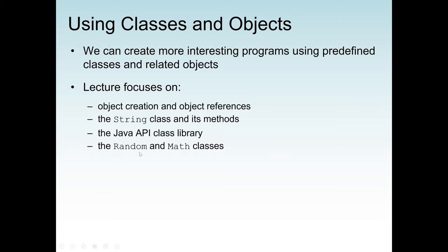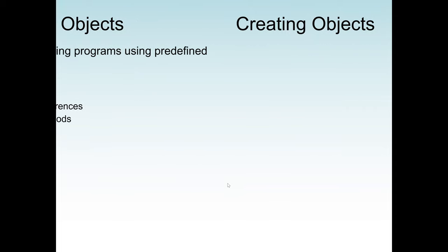We are going to use only two types of classes in this lecture, though Java has many built-in classes. We will use the Random class and the Math class. The Random class makes it possible for us to generate random values based on the type of method we call and the type of values we need. The Math class has many mathematical functions — for example, trigonometry functions like sine, cosine, tangent, square root, power, and absolute value. The Random class also lets us print random values as output.